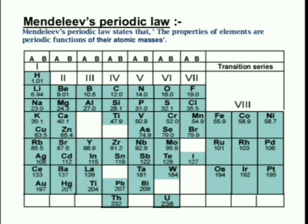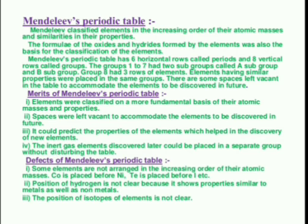Mendeleev's Periodic Table. Mendeleev classified elements in the increasing order of atomic masses and similarities in their properties. The formula of oxides and hydrides formed by elements was also a basis for classification. Mendeleev's periodic table has six rows called periods and eight vertical rows called groups. Groups one to seven have two subgroups: A subgroup and B subgroup. Group eight has three rows of elements. Elements having similar properties were placed in the same group. Spaces were left vacant to accommodate elements to be discovered in the future.